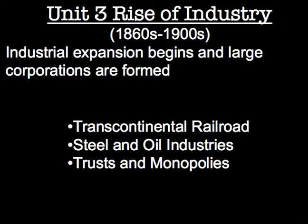In Unit 3 we studied the second wave of the Industrial Revolution, which began in America in the 1860s. The first several units we study in eighth grade all cover roughly the same time period — from the end of the Civil War into the early 1900s. We looked at the rise of the great industrialists, or robber barons, the Transcontinental Railroad connecting the East and West Coasts, the steel and oil industries, and how those great industrialists encouraged the growth of monopolies in America.